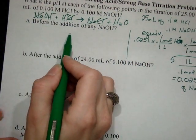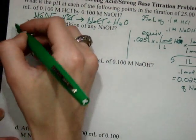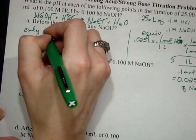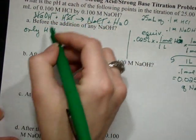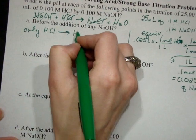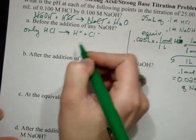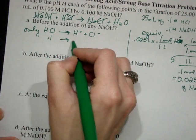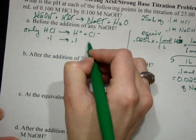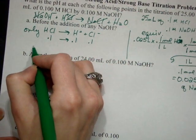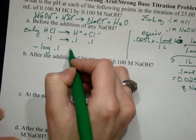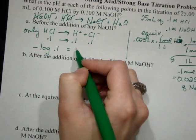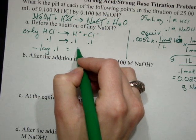All right, before the addition of any sodium hydroxide, we have only HCl in the beaker, which is H plus and Cl minus. So if we have 0.1 molar here, that means we have 0.1 molar of each of those. So it's just the negative log of 0.1, and that gives us a pH of 1.